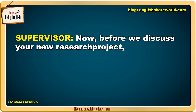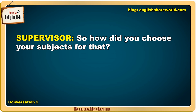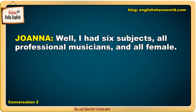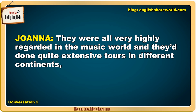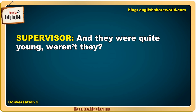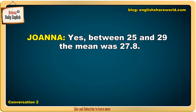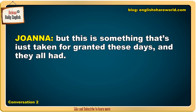Hi, Joanna. Good to meet you. Now, before we discuss your new research project, I'd like to hear something about the psychology study you did last year for your master's degree. So, how did you choose your subjects for that? Well, I had six subjects, all professional musicians and all female. Three were violinists, and there was also a cello player, a pianist, and a flute player. They were all very highly regarded in the music world, and they'd done quite extensive tours in different continents, and quite a few had won prizes in competitions as well. And they were quite young, weren't they? Yes, between 25 and 29. The mean was 27.8. I wasn't specifically looking for artists who'd produced recordings, but this is something that's just taken for granted these days, and they all had.